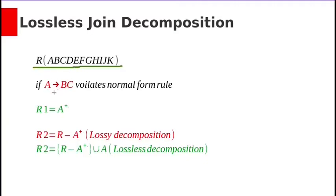In this relation, suppose functional dependency A determines BC violates some normal form rule. Then we need to decompose this original relation R into 2 smaller relations R1 and R2.